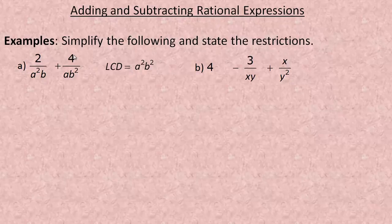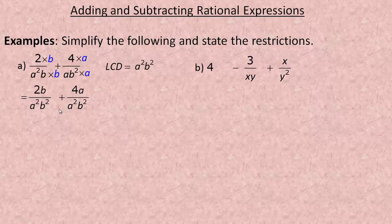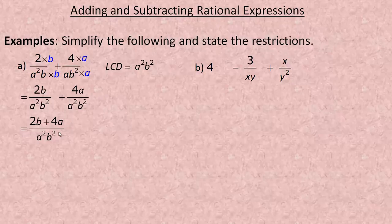We need to multiply top and bottom to get the same denominator. This denominator is a squared b, so we need a squared b squared — multiply top and bottom by b. The other has ab squared and just needs an a, so multiply by a top and bottom. Multiplying out: a squared b times b is a squared b squared, and ab squared times a is a squared b squared. So the result is 2b plus 4a over a squared b squared.